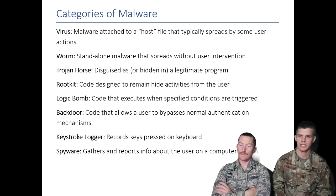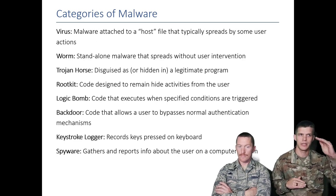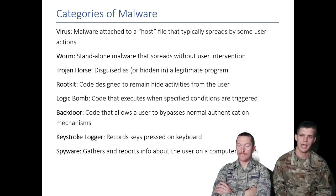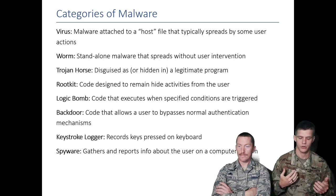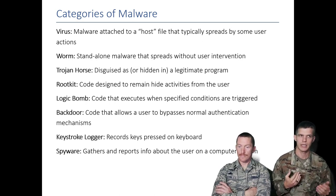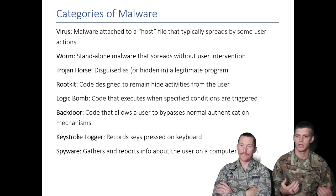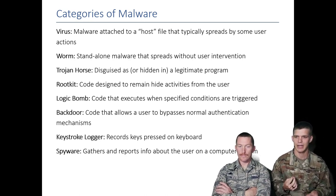Rootkits are a generic term for anything that can hide malicious activity. They can exist with root-level privileges, in your firmware, or anywhere in the privilege stack of your computer. The lower they go, the more they can hide. Your computer relies on the BIOS and firmware to tell it what's going on — if a rootkit subverts that ability, it might run a process without you knowing about it. A logic bomb is a piece of code designed to execute at a specific time or when a specific action takes place.